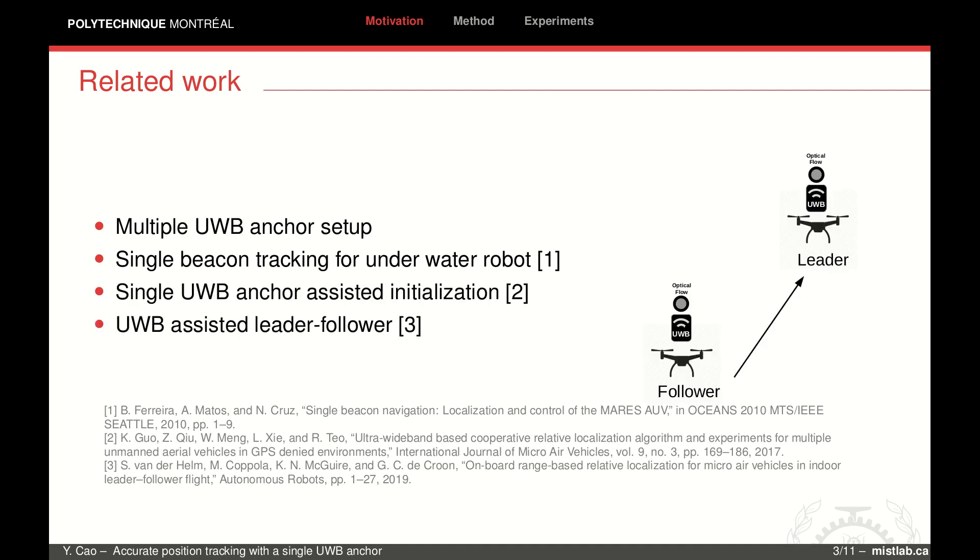There are also studies about tracking with a single UWB anchor in a leader follower scenario using optical flow as a velocity sensor. Considering velocity sensors are much rarer and generally too expensive for IoT devices, we prefer using only a low-cost IMU and one UWB anchor.